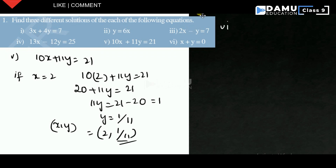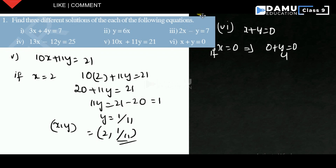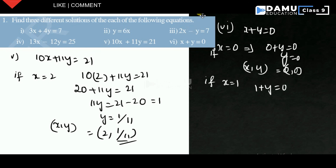The sixth equation is x + y = 0. If x = 0, then 0 + y = 0, so y = 0; solution is (0, 0). If x = 1, then 1 + y = 0, so y = -1; solution is (1, -1).